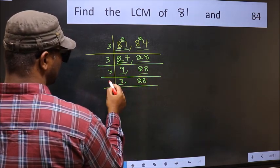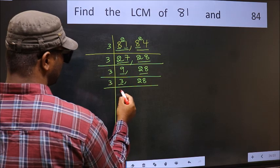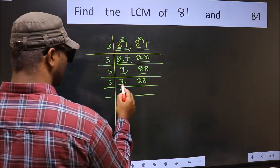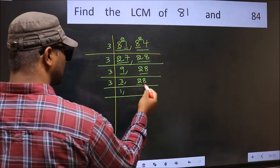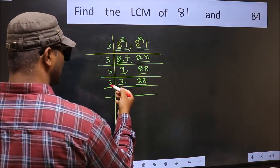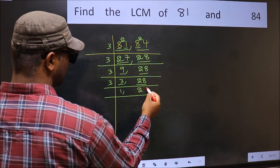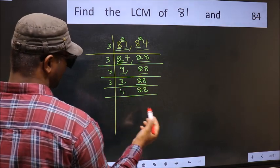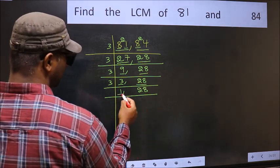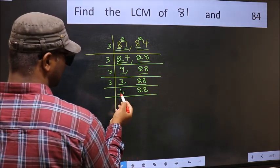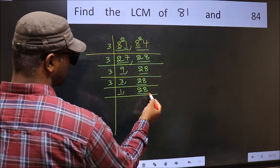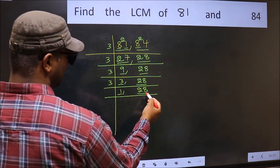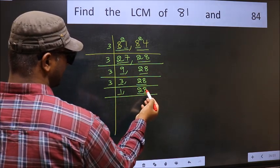Now we have 9. 9 is divisible by 3 — 3 threes are 9. The other number 28 is not divisible by 3, so write it down as it is. Now we have 3 — 3 is a prime number, so 3 ones are 3. The other number 28 is still not divisible by 3. Write it down as it is. Now we have 1 here, so focus on the next number, 28.